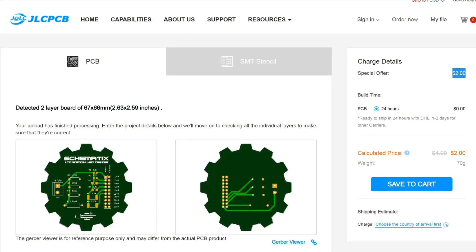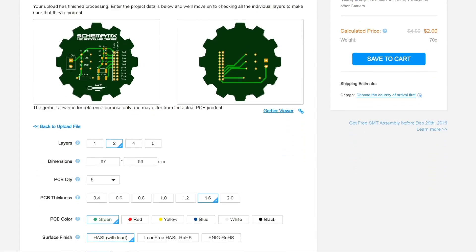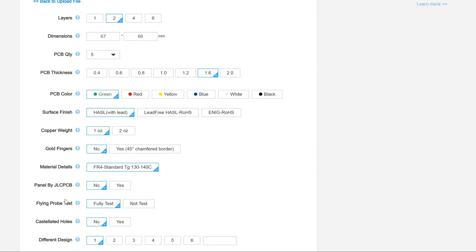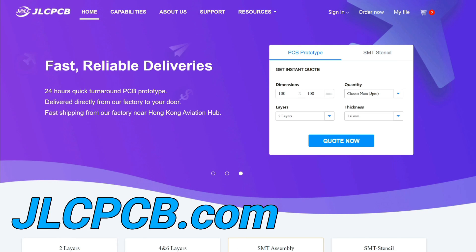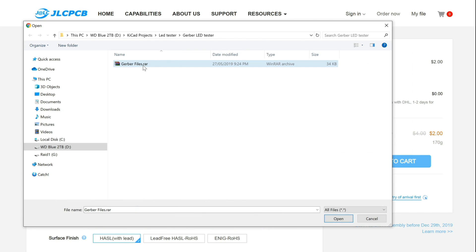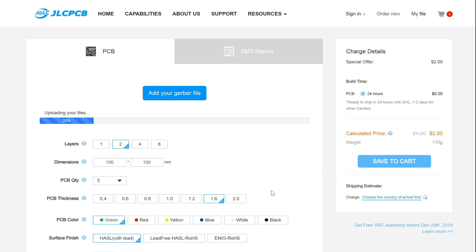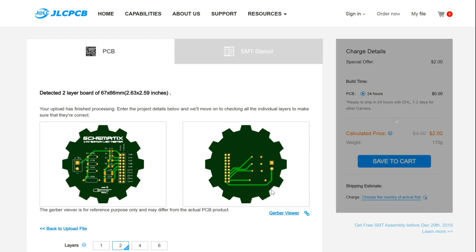But if I did I would use this video's sponsor JLCPCB. Five circuit boards cost as little as two dollars. They offer fast production time and with a multitude of design options you're only limited by your imagination.